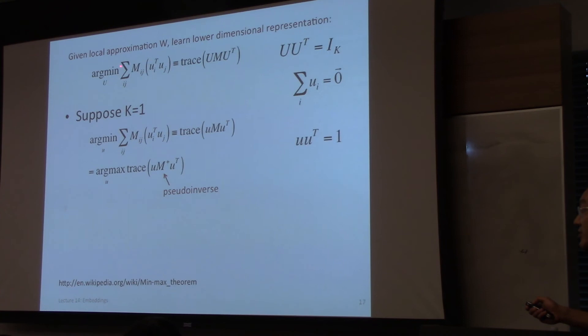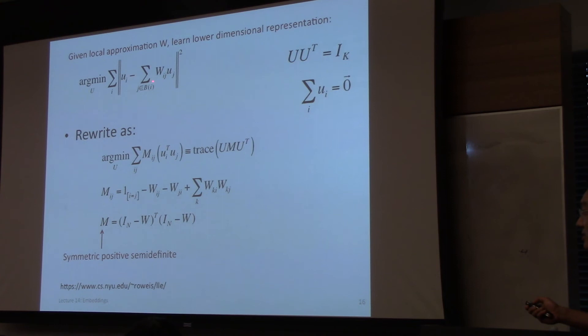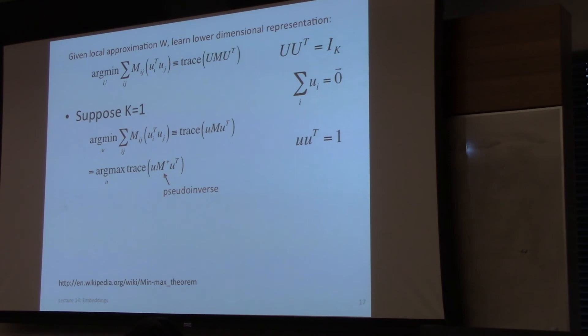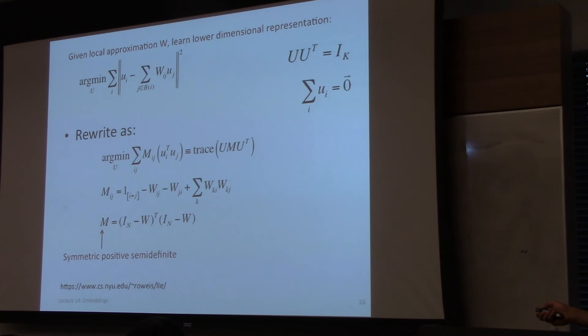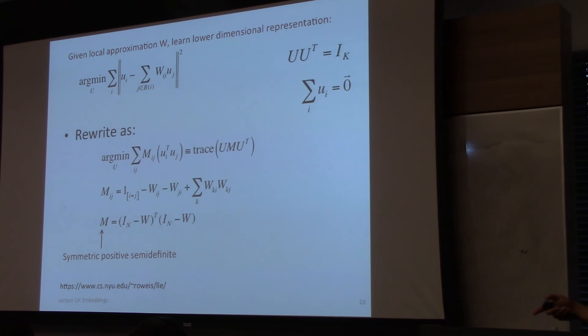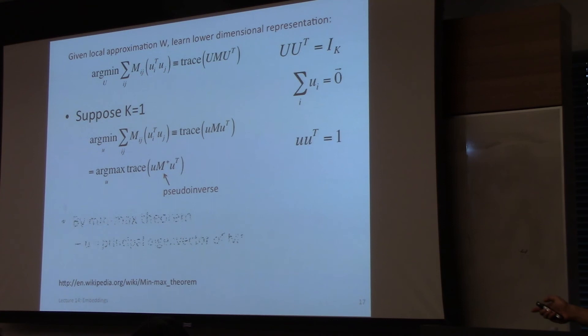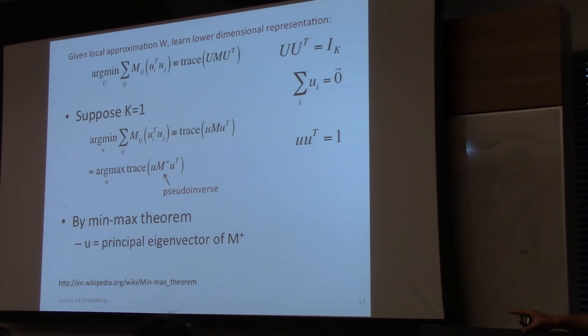In many cases when you have a definition of this form — which occurs in graph Laplacian problems — the solution to a minimization problem of this form is one of the smallest eigenvectors of the matrix. For a rigorous derivation, you can look up graph Laplacian on Wikipedia. It turns out M is actually positive definite, so there's no need to use the pseudo-inverse; I should simplify that slide.